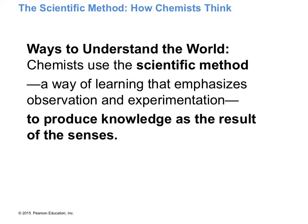Not just chemists but scientists in general — and you probably already do this without thinking about it — utilize what's called the scientific method. It's where you make an observation, formulate a hypothesis based on those observations, perform experiments to test it, and then see how the results relate back to your original hypothesis. You repeat this process to arrive at an answer.